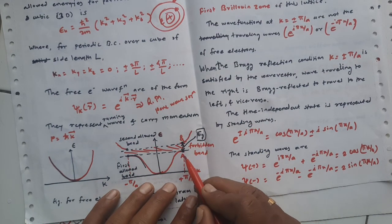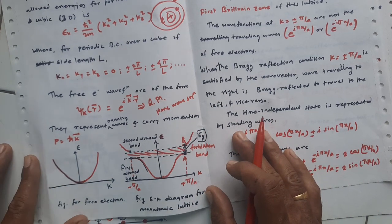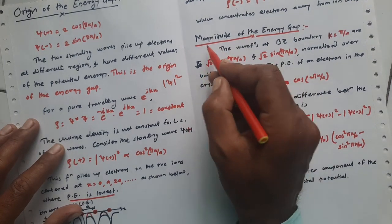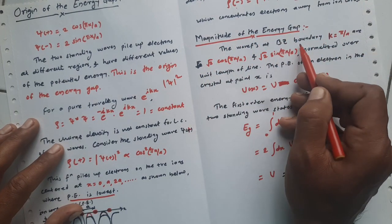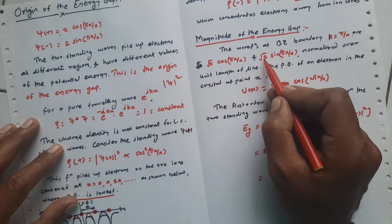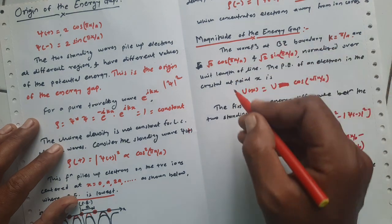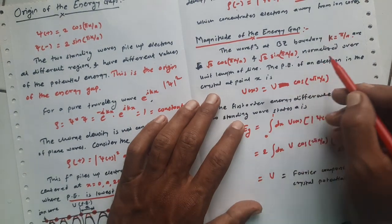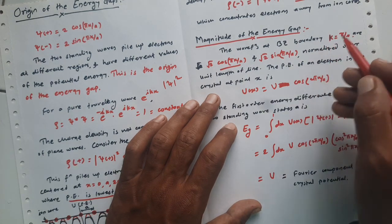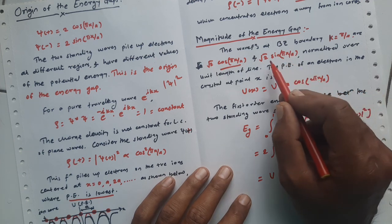We will find the energy gap at points A and B — the wave function at point B is ψ- and at point A is ψ+. The wave functions at the first Brillouin zone boundary, where k = π/a, are root-two times cos(πx/a) and root-two times sin(πx/a), normalized over the unit length. The potential energy of the electron in the crystal at a point x is given by U(x) = U·cos(2πx/a).